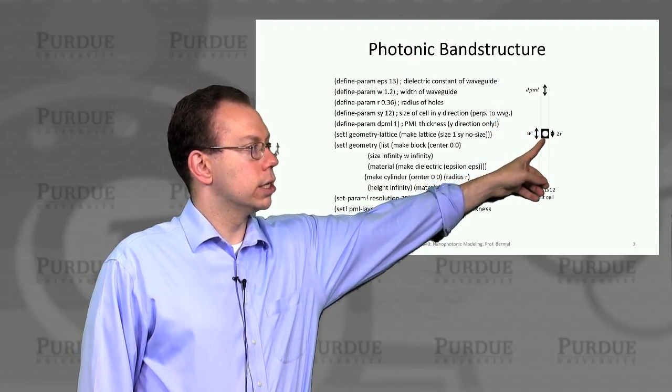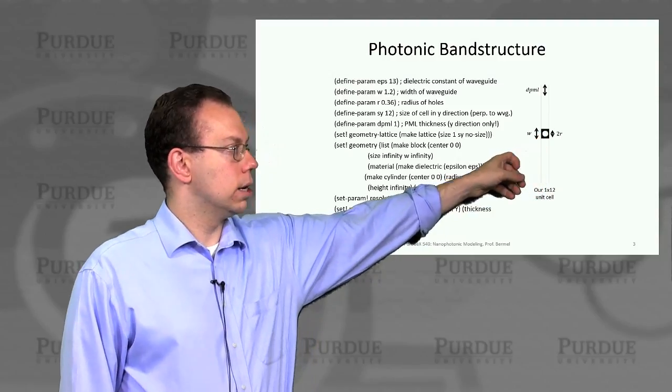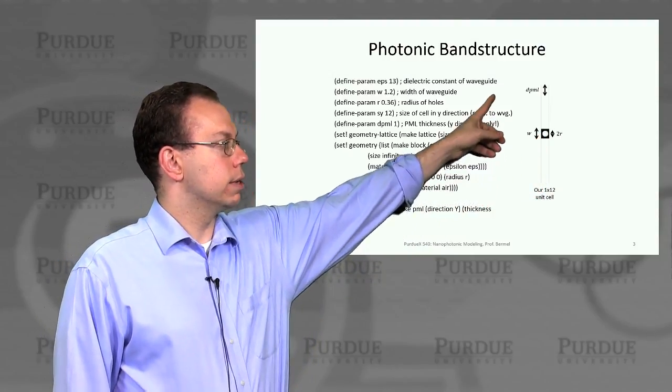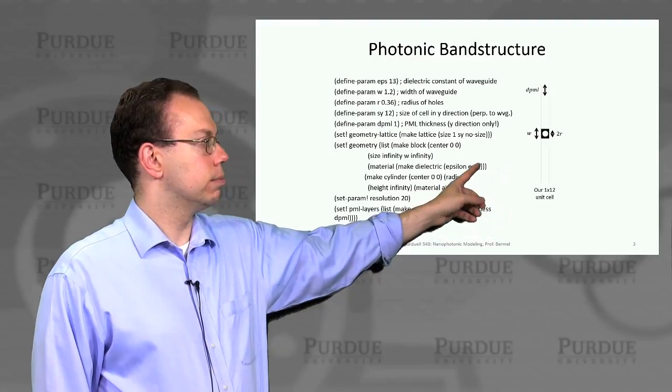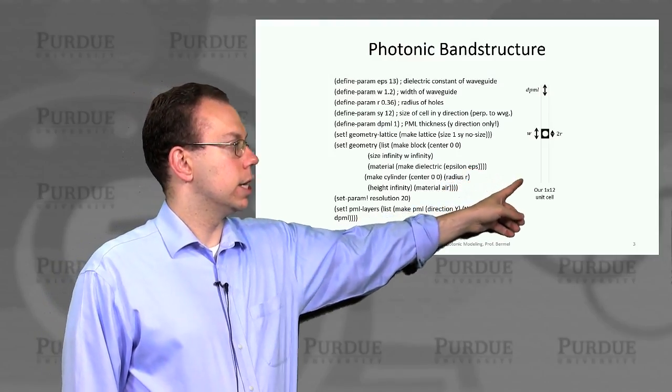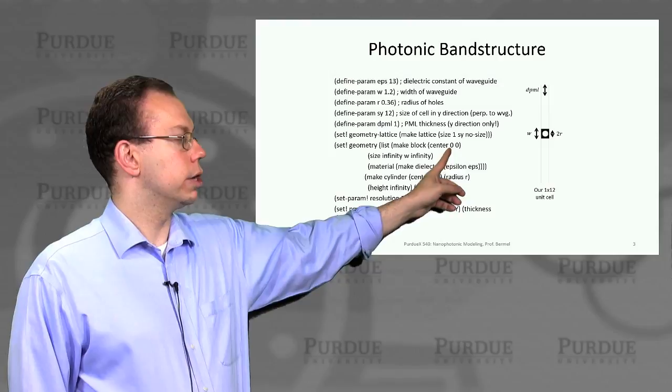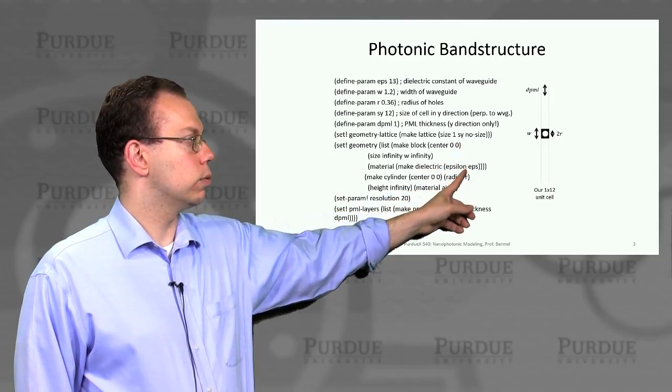which of course has a diameter of 2r. And then we have a relatively large size for this system. And then we assume that it's going to be periodic in the x direction. And that was basically imposed by this size 1SY.